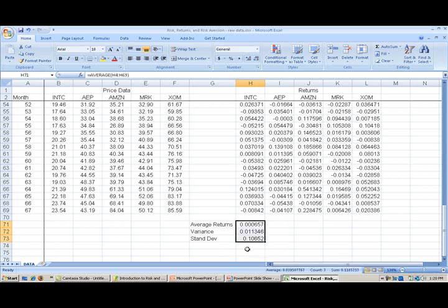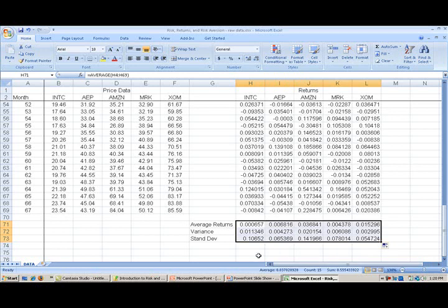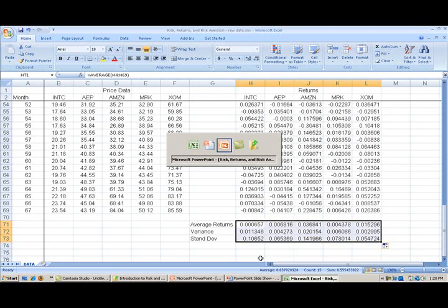To calculate the average returns, variance, and standard deviation for all five stocks, let's select the three cells where we've calculated the average returns, variance, and standard deviation for Intel. Go to the bottom right-hand corner of these cells, so you get the plus sign, press the left cursor key down and hold, copy across to ExxonMobil, and then take your finger off the left cursor key. We've now calculated average returns and risk for these five stocks. You can now see the power of Excel. We can very quickly do lots of calculations that would otherwise take a long time. Let's go back to our PowerPoint presentation.